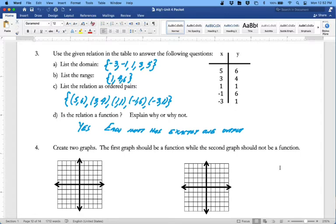On four, the first graph should be a function while the second graph should not be a function. Well, that's a function because it passes the vertical line test. That's NOT a function because it fails the vertical line test—I can put vertical lines through and those vertical lines cross the graph more than once.